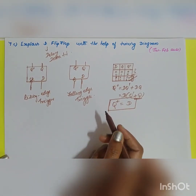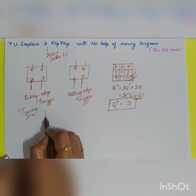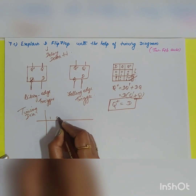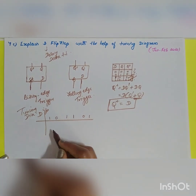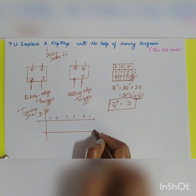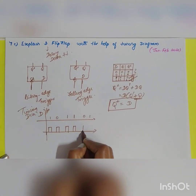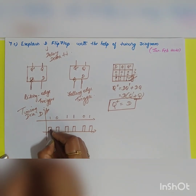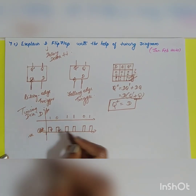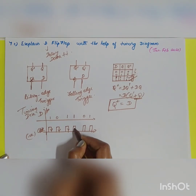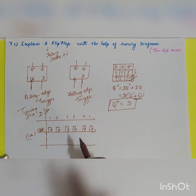Now for the timing diagram, take the input D as 1, 0, 1, 1, 0, 1. The flip-flop responds only to the clock pulse. Taking this as a negative edge trigger means the output changes only during the falling edge of the clock.